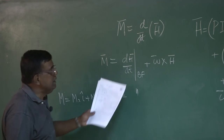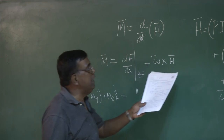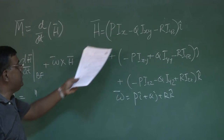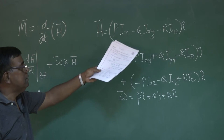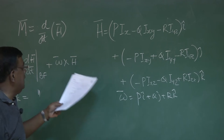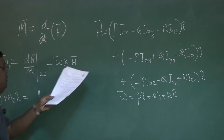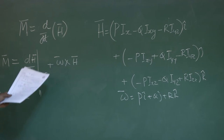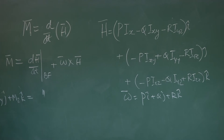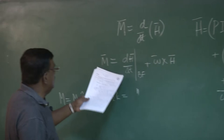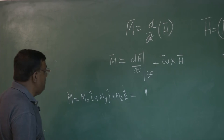Do this operation and write M as Mx·i plus My·j plus Mz·k. That is equal to this expression. On the right-hand side, you will get the result when you substitute for H the i, j, and k components, perform the omega cross H vector operation, and do dH/dt as a scalar differentiation — and that equals the moment vector M.